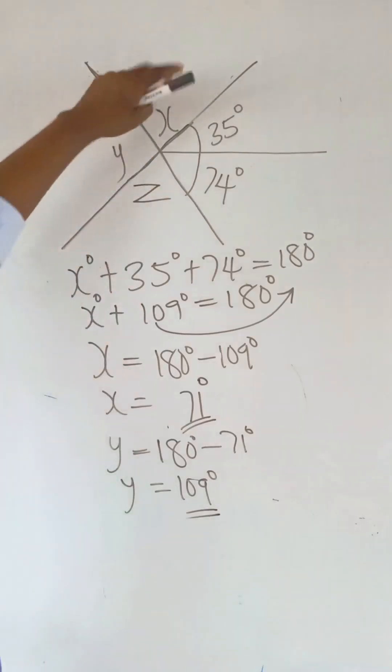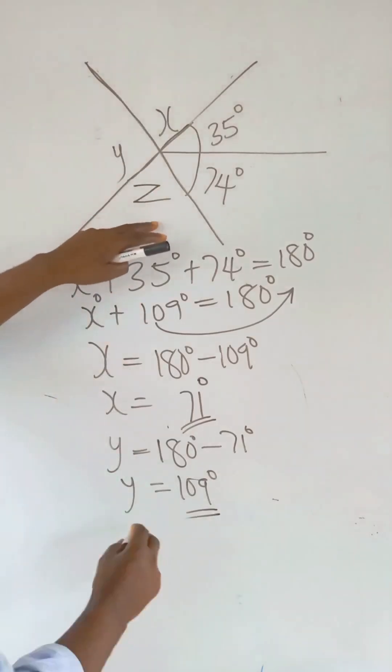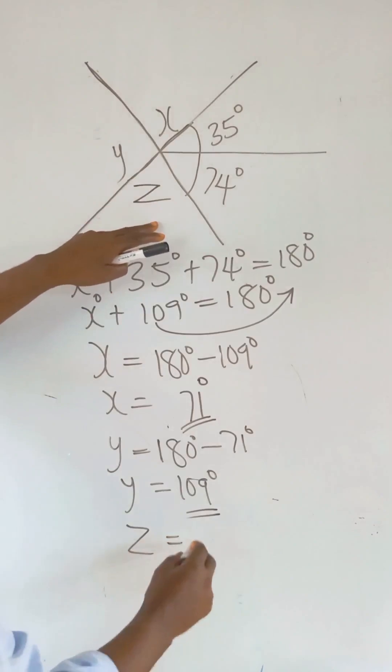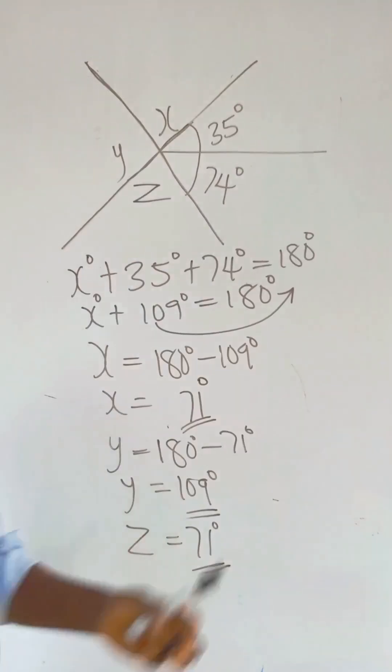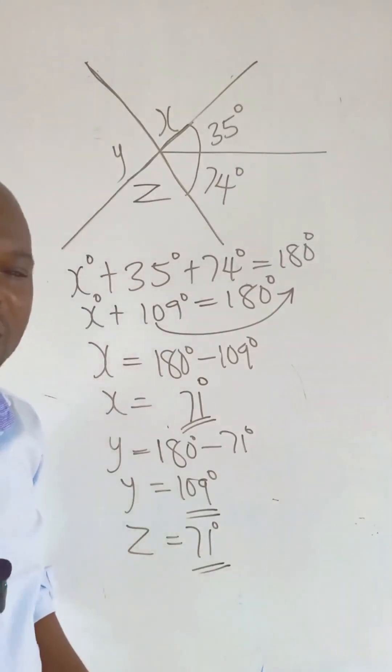And Z, whatever here is, is what Z is, and Z equal to also 71 degrees. So that is how you simplify, friends. Bye.